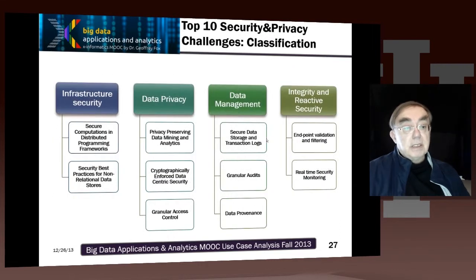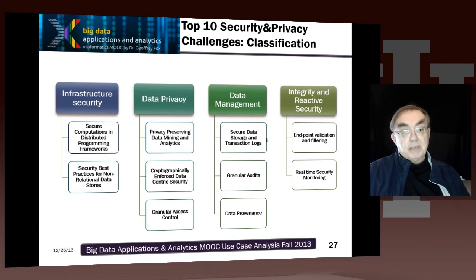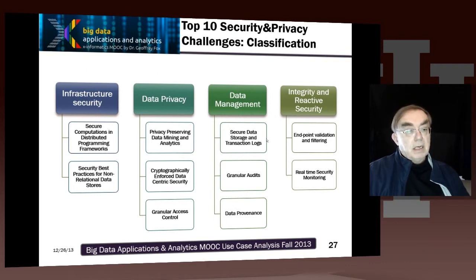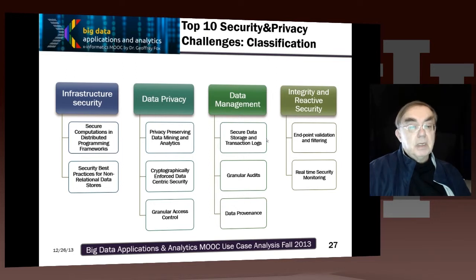Here are these ten challenges, classified into four areas. Infrastructure security involves trying to do computations that are secure in distributive programming frameworks, and also best practices outside relational databases, because HDFS and NoSQL have their own special challenges not necessarily addressed by the database community. Privacy is particularly important. It involves keeping commercial secrets properly for the companies that own those secrets. It also applies to health applications, and you need to understand how to do data mining analytics while preserving privacy.